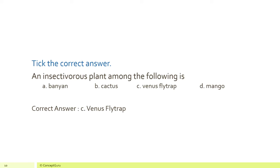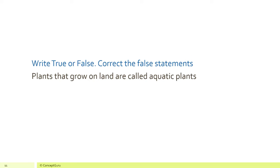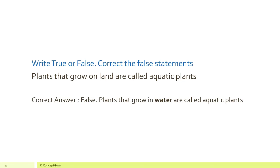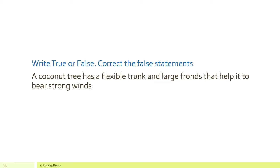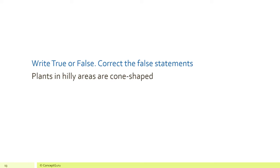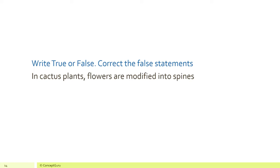Now let's do some true or false questions. If it is a false statement, you have to correct it. The first one: plants that grow on land are called aquatic plants — this is false; they are called terrestrial plants. Next: a coconut tree has a flexible trunk and large fronds that help it to bear strong winds — this is a true statement. Next: plants in hilly areas are cone-shaped — this is also a true statement. Next: in cactus plants, flowers are modified into spines.